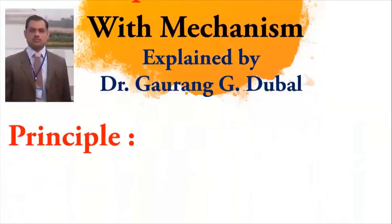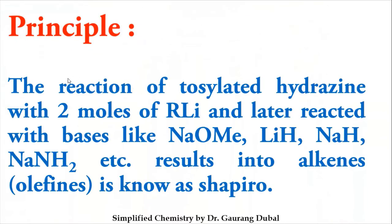The principle of this reaction: the reaction of tosylated hydrazine with two moles of alkyl lithium, and the intermediate further reacted with bases like sodium ethoxide, lithium hydride, sodium hydride, or sodamide — will result in an alkyne or olefin. Both are possible outcomes, and this is known as the Shapiro reaction. Tosylated hydrazine reacts with two moles of alkyl lithium to remove two protons, and further reaction with bases gives alkyne or olefins.